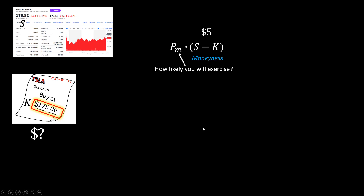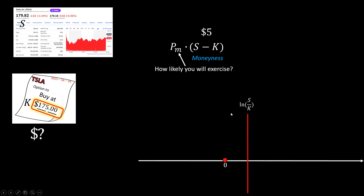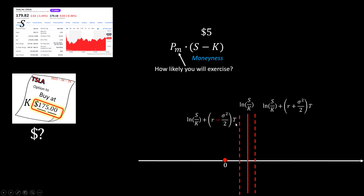So we measure the level of moneyness using ln(S/K). If it's in the money, it's positive. If it's out of the money, it's negative. So from the current level, it could get better — hence the addition of the volatility term is the expected good case scenario. It can also get worse, so the subtraction of the volatility term is the expected bad case.